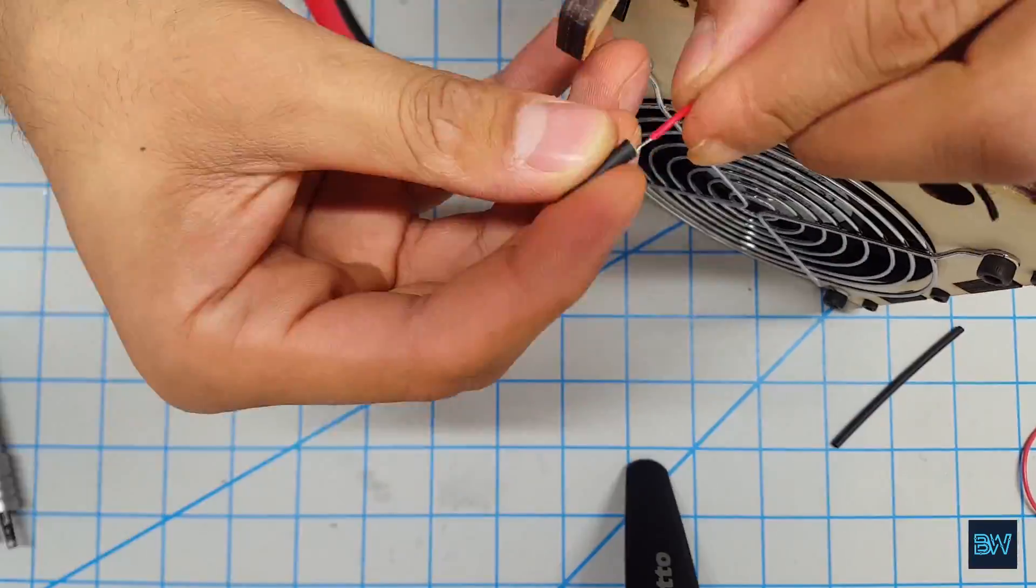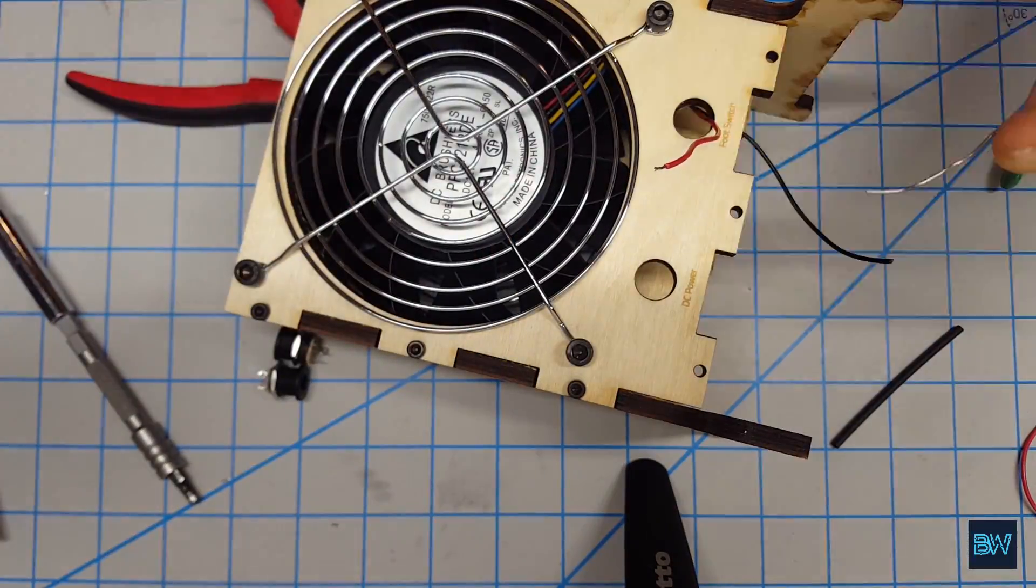Solder the fan with the two DC jacks in series, one for power and the other for the foot lever.